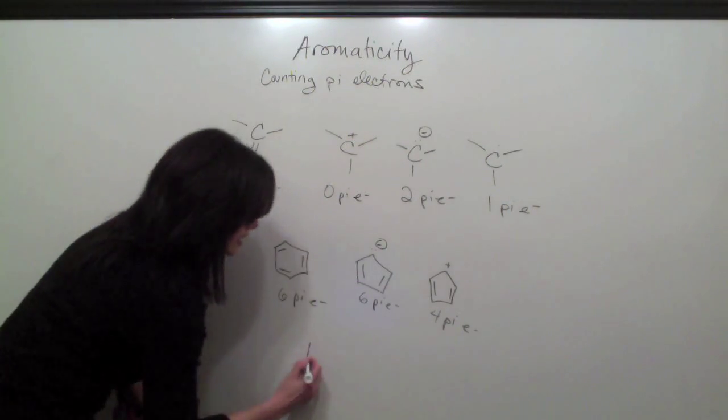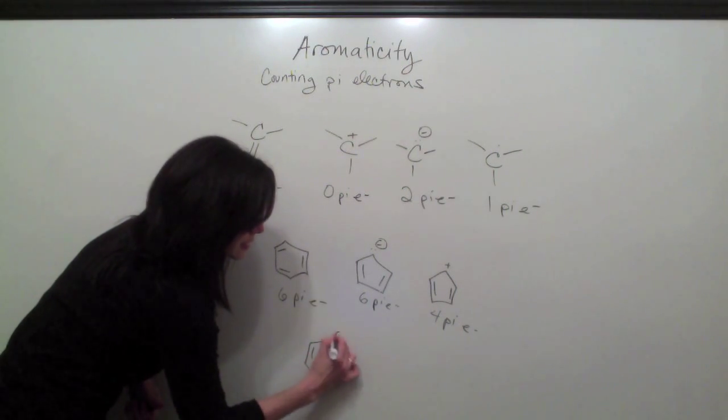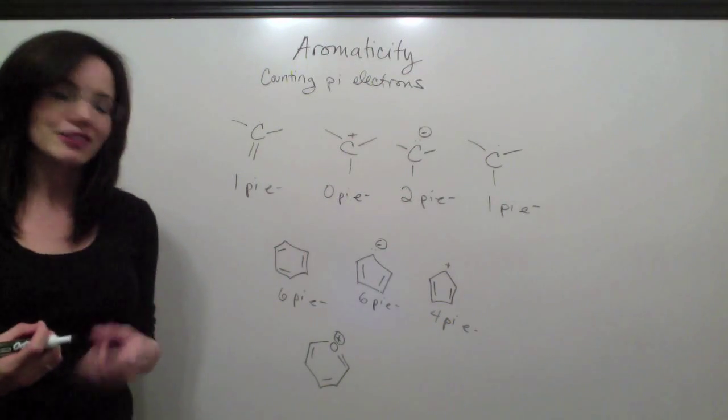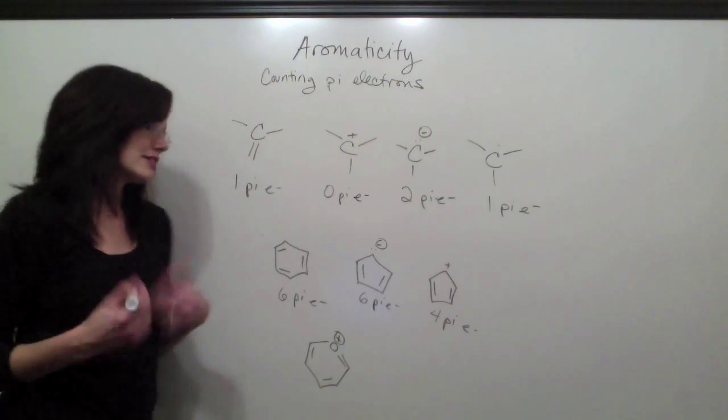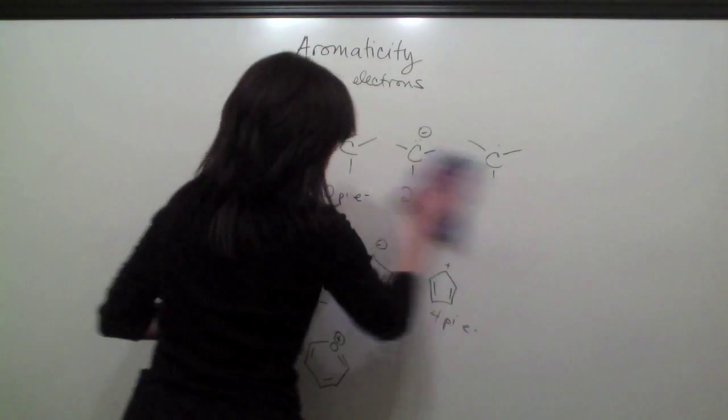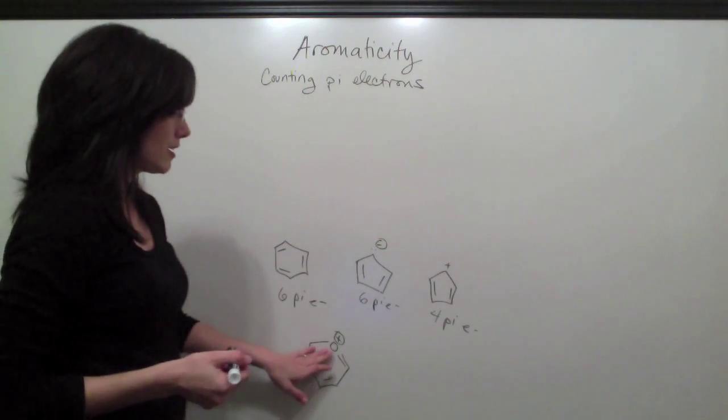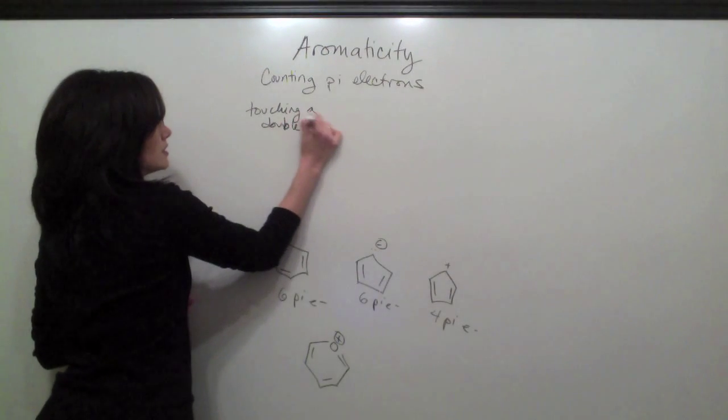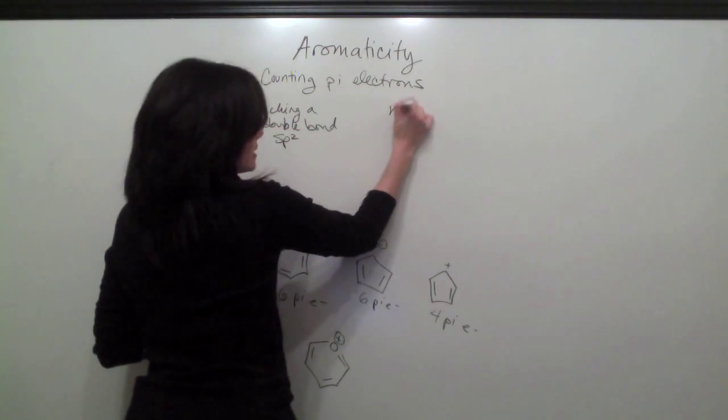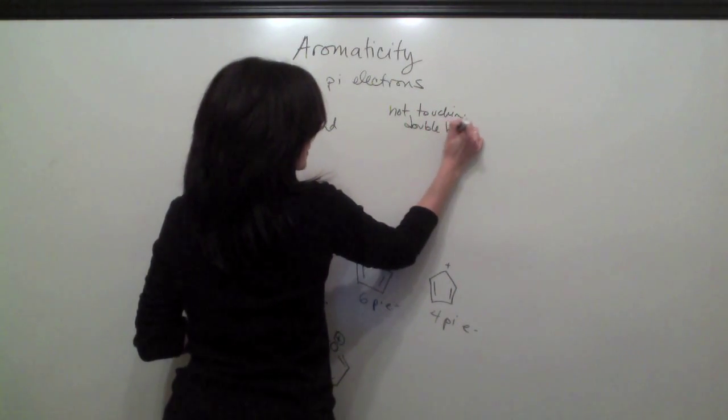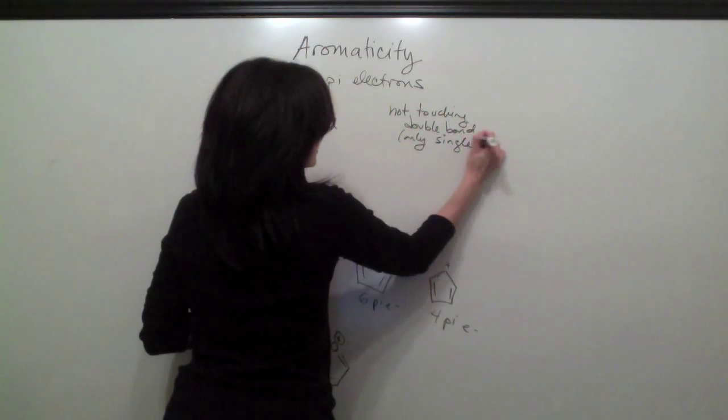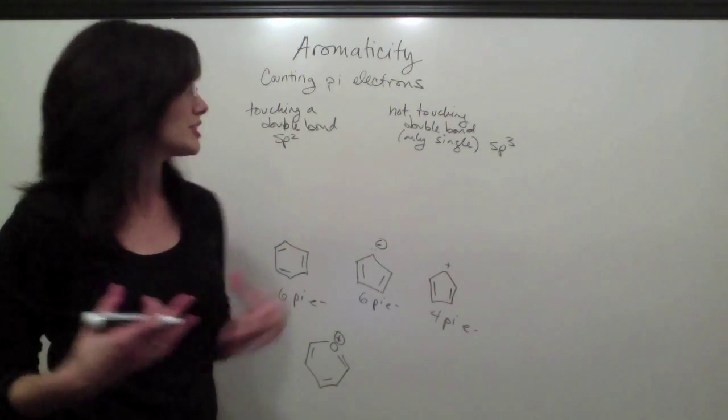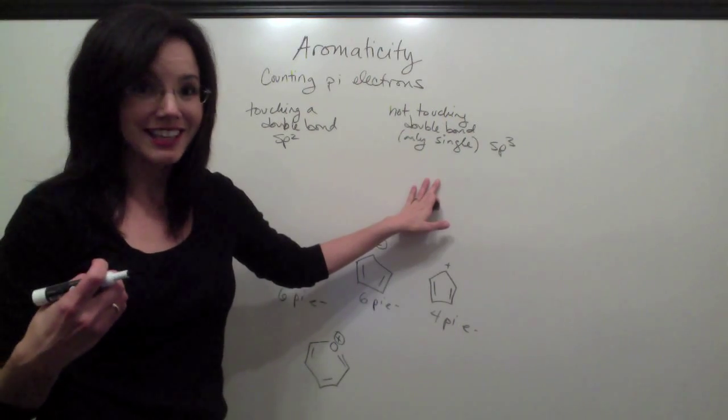Now one thing that'll happen is you'll run into some examples where you have heteroatoms, non-carbon, non-hydrogen atoms in your ring. So you also have to know how many pi electrons those atoms are worth. And it just depends on their hybridization. Like we discussed in aromaticity part one, you can really simply tell hybridization just based on whether that atom is touching a double bond or not. If it's touching a double bond, it's going to be sp2. And if it's not touching a double bond, but only singles, that's going to be sp3. Now keep in mind, this is a broad generalization. If you're taking organic one and you're actually studying hybridization, you don't want to go by these rules. But for the purpose of an aromaticity lecture, this is going to work very well.